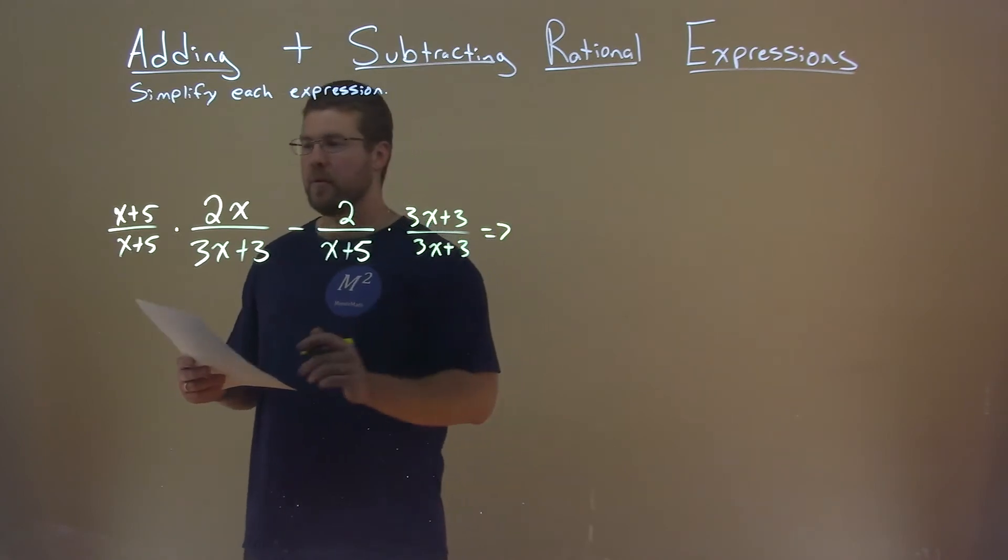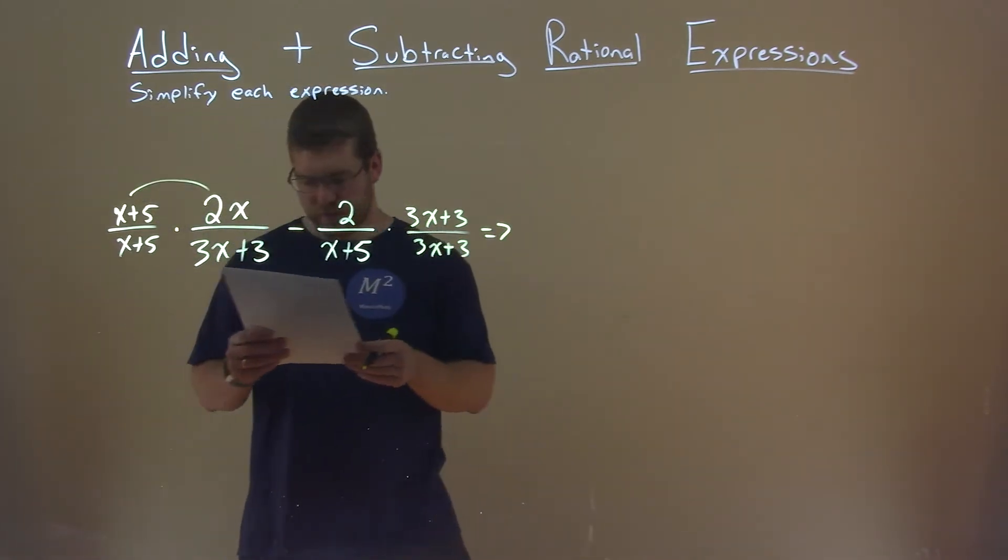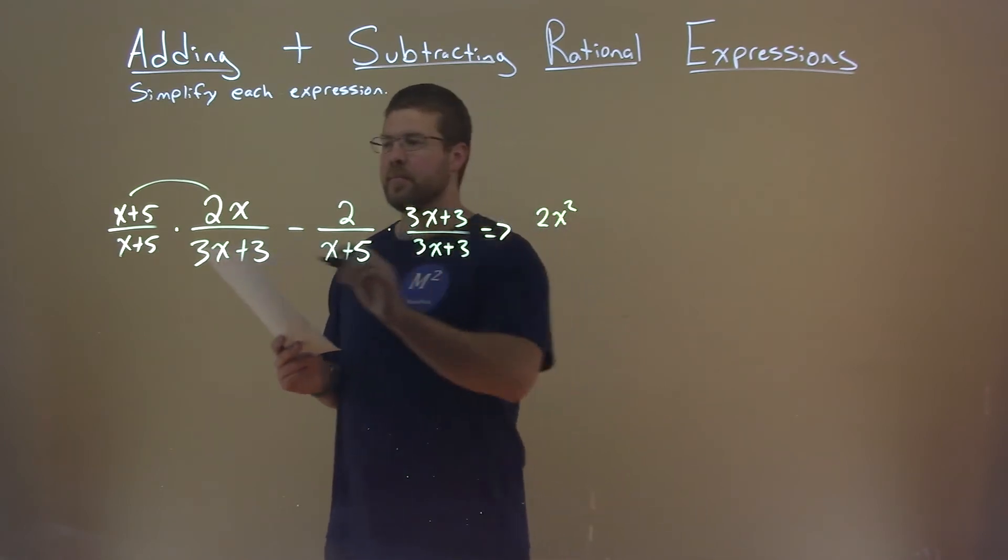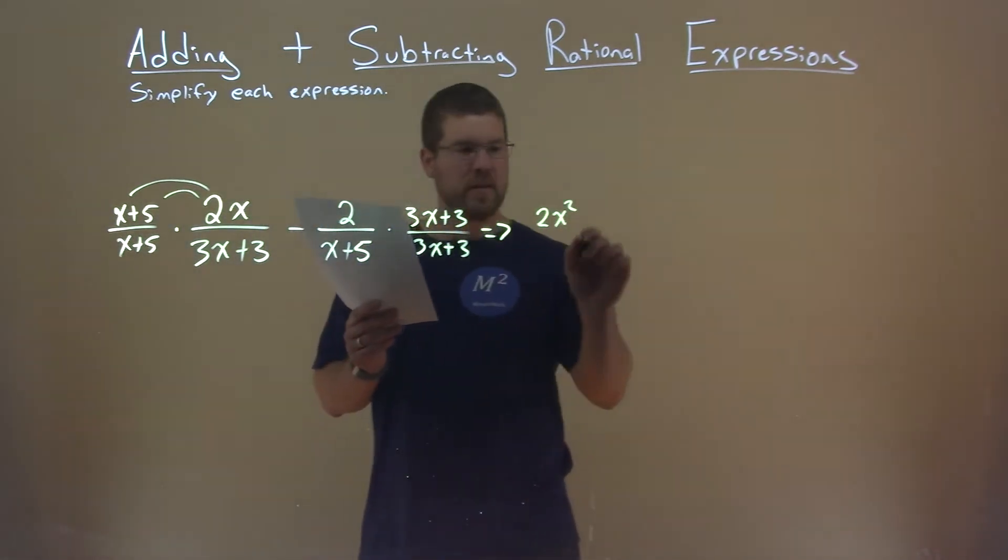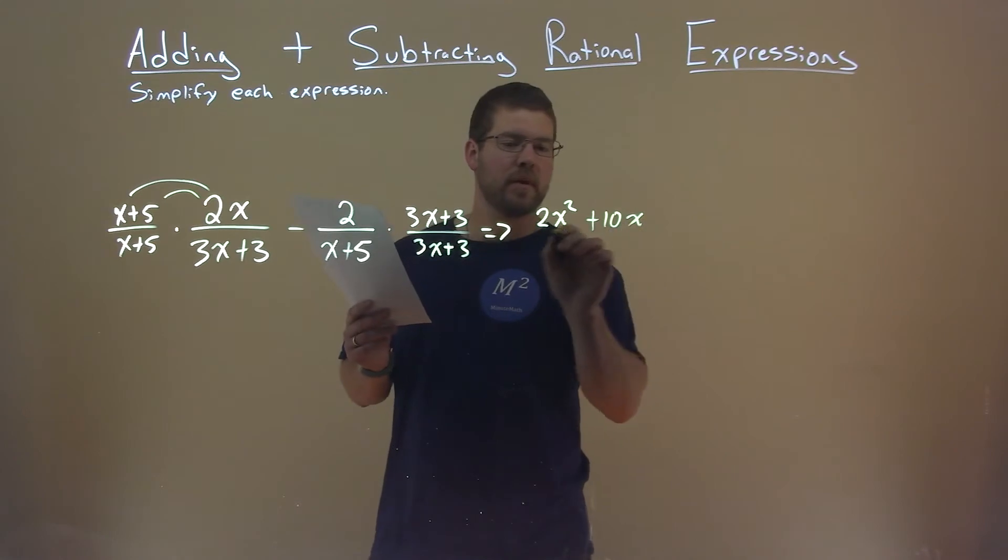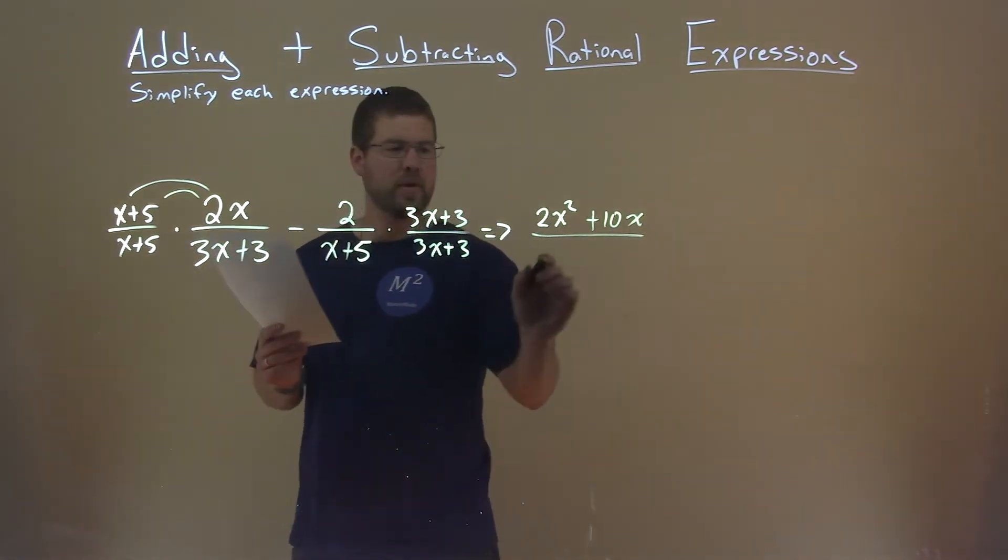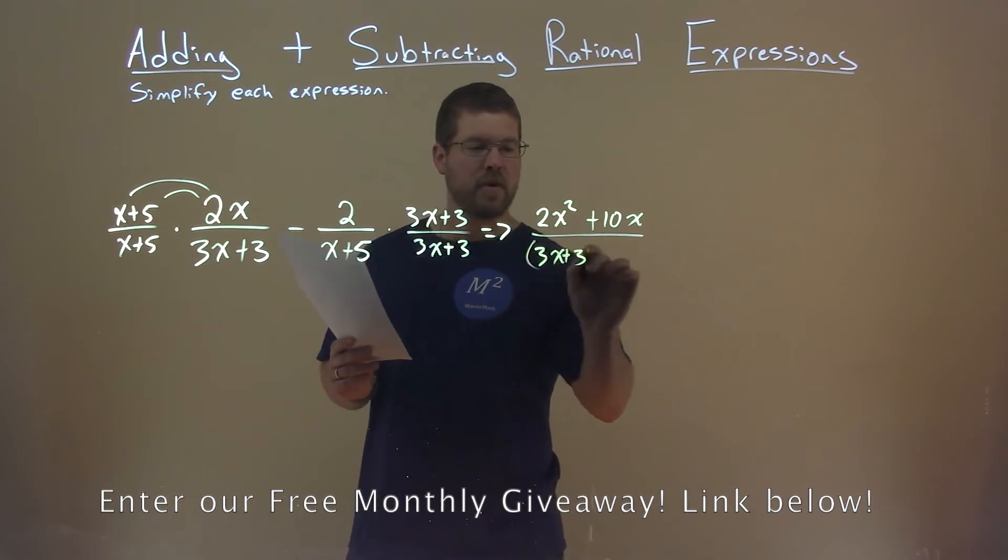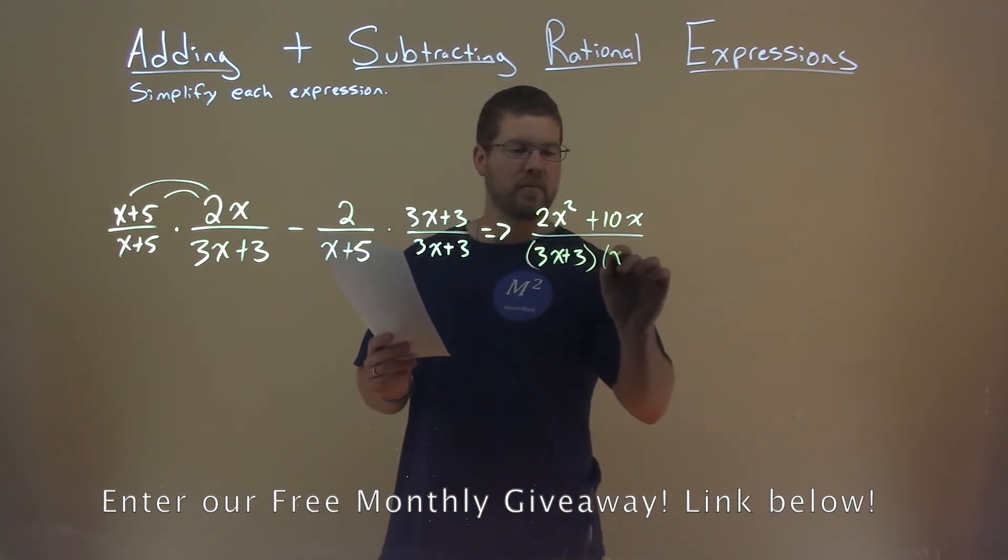So what happens when we do that? Let's distribute. x times 2x is 2x squared. 5 times the 2x is 10x, over that denominator, 3x plus 3, times x plus 5.